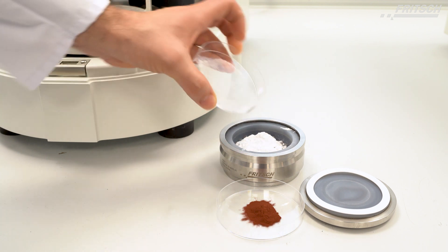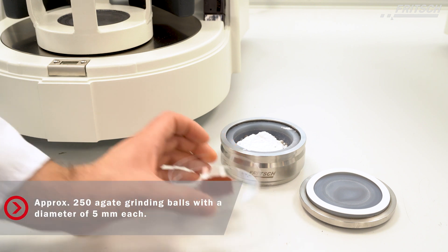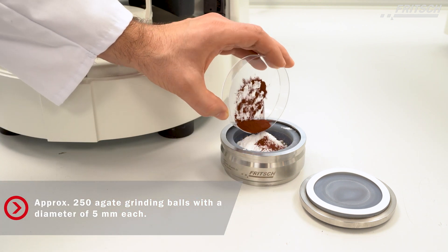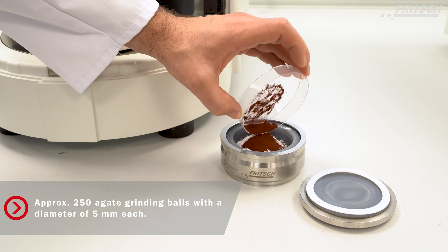This 80 ml volume agate grinding bowl is filled with about 250 agate grinding balls with a diameter of 5 mm each.